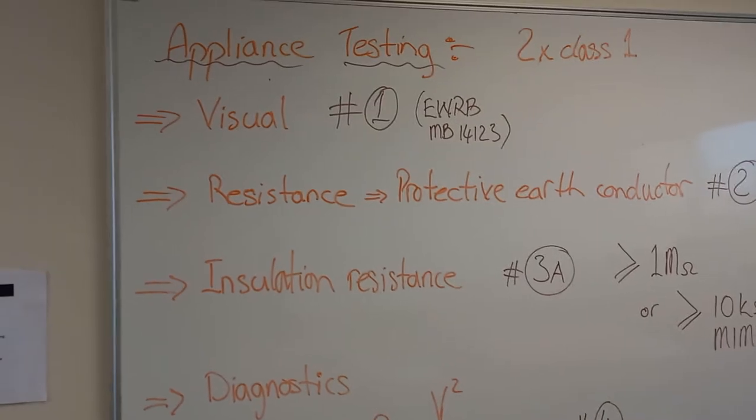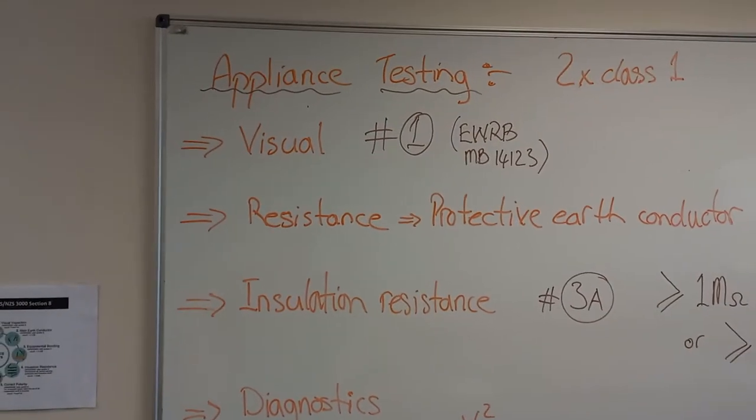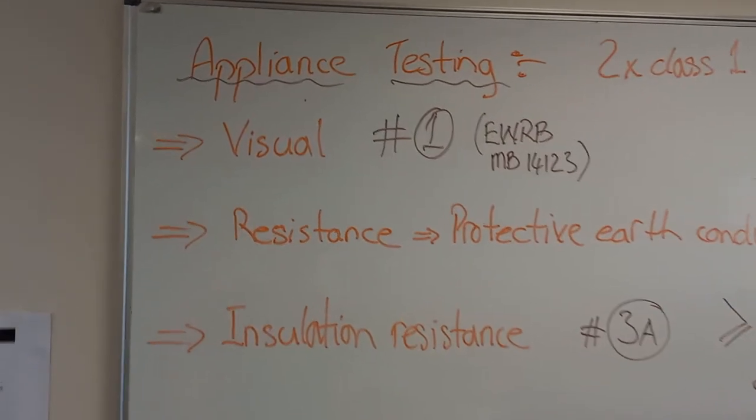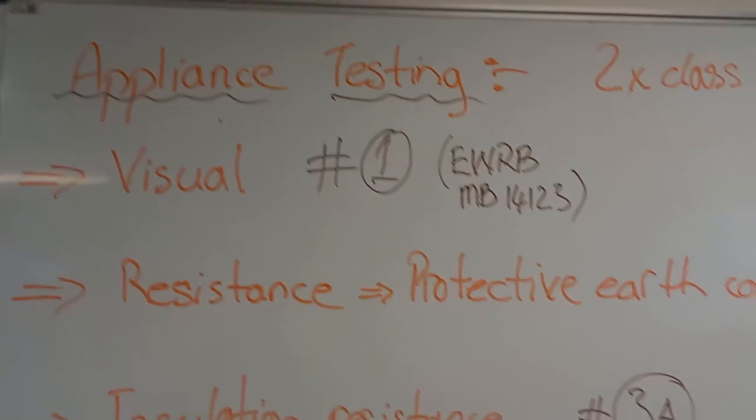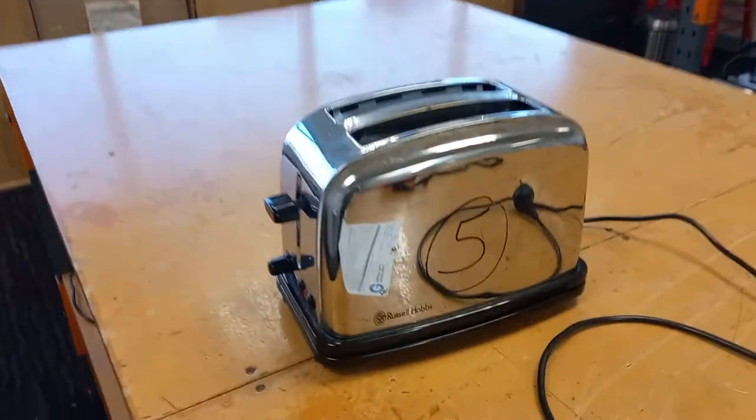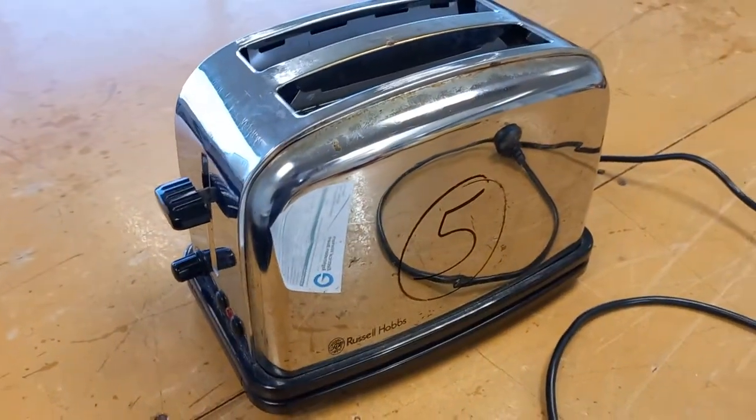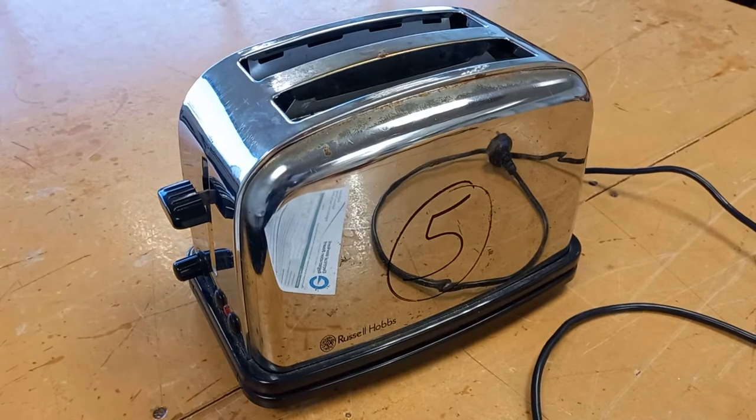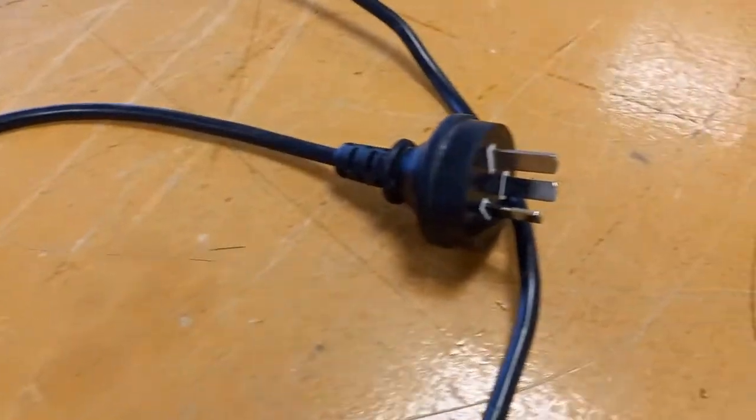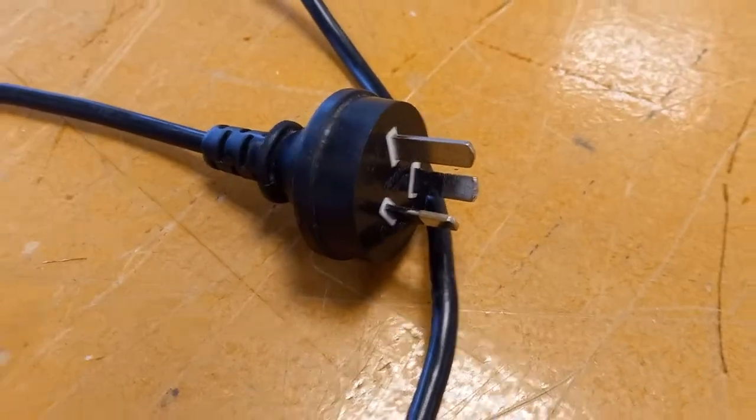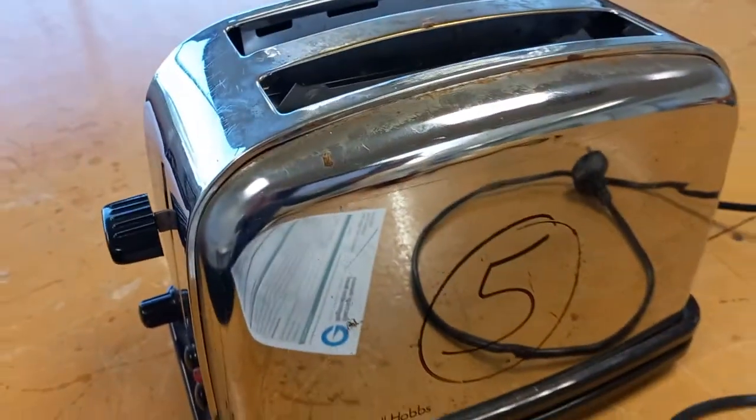The first test is the visual test, which is very important and doesn't use any instruments. Let's look at a typical Class 1 appliance - this pop-up toaster with a metal case. It is protected with a protective earth conductor from the earth pin on the plug to the case of the appliance.